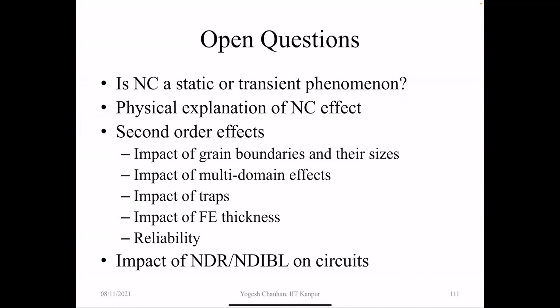Some open questions you can take up as research topics: Is NC a static or transient phenomenon? How can you physically explain the NC effect? What is the impact of second-order effects — grain boundaries, their sizes, multi-domain effects, traps effects, ferroelectric thickness along with traps, and reliability. How will NDR or negative DIBL impact circuits? In conclusion: I_on/I_off is the challenge in new technology nodes. NCFET addresses this and is one of the best choices. Hafnium zirconium oxide is a good ferroelectric material compatible with CMOS, though integration is still a challenge. SPICE models are available for circuit simulation.